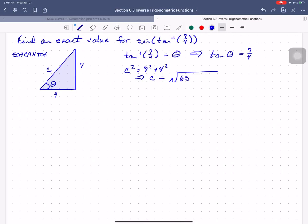So square root 65. Now 65 is not a perfect square. 65 does not have any perfect square factors because 65 is 5 times 13. Those are both prime numbers. So we can't reduce that. So we know that this now equals the square root of 65.